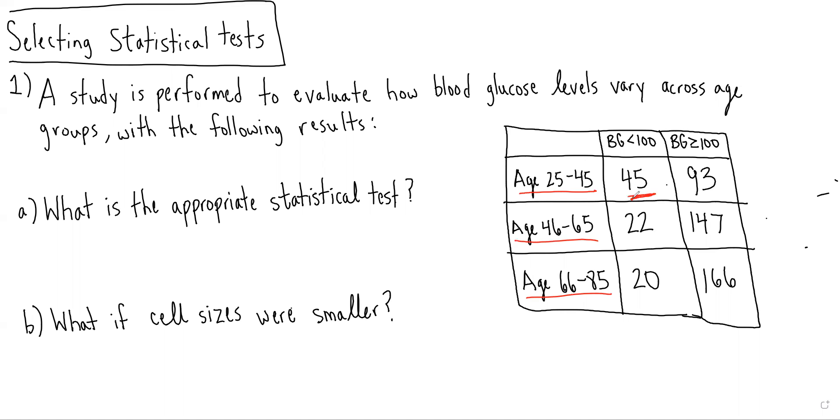You can count that there are 45 patients age 25 to 45 with a blood glucose less than 100. You can count that there are 93 patients age 25 to 45 with a blood glucose greater than 100.